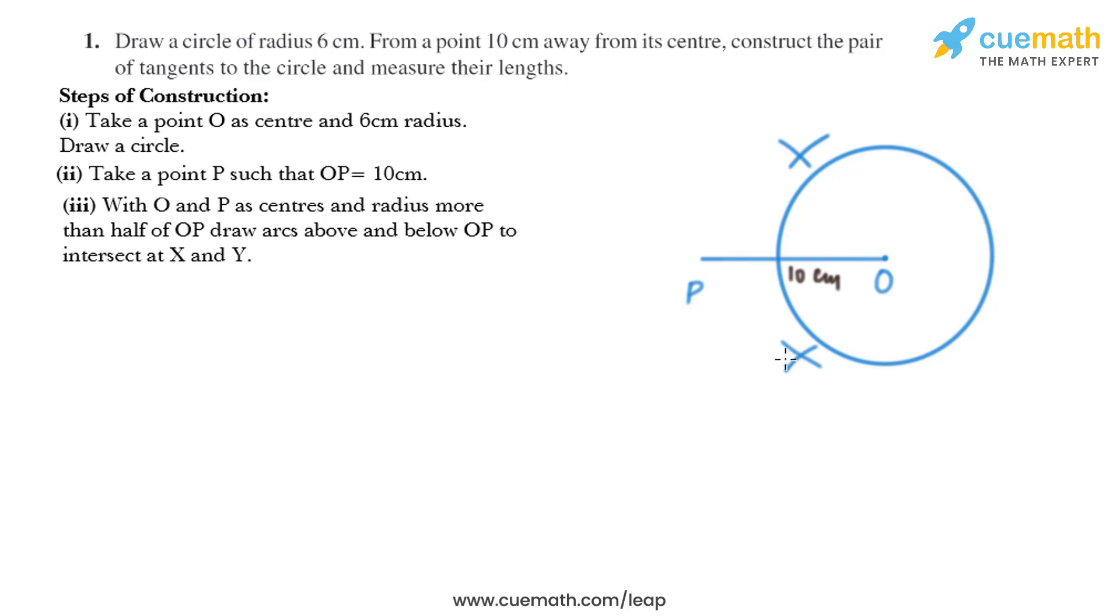Same thing we'll do below the line OP and after that we name the point of intersection as X and Y. Now this XY intersects OP at M.